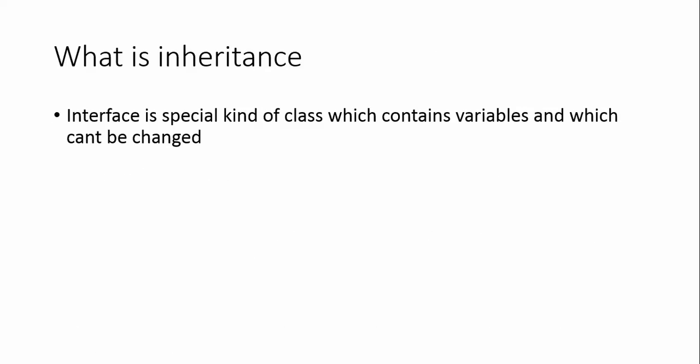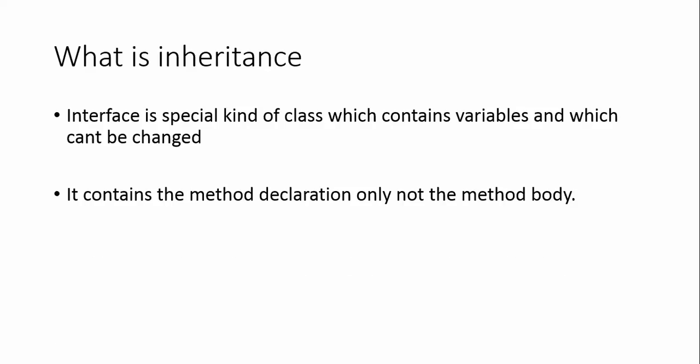So what is an interface? An interface is a special kind of class which contains variables that cannot be changed. It contains method declarations only, not method bodies. You can only declare the methods — you cannot write the body, because the respective class has to write the body.